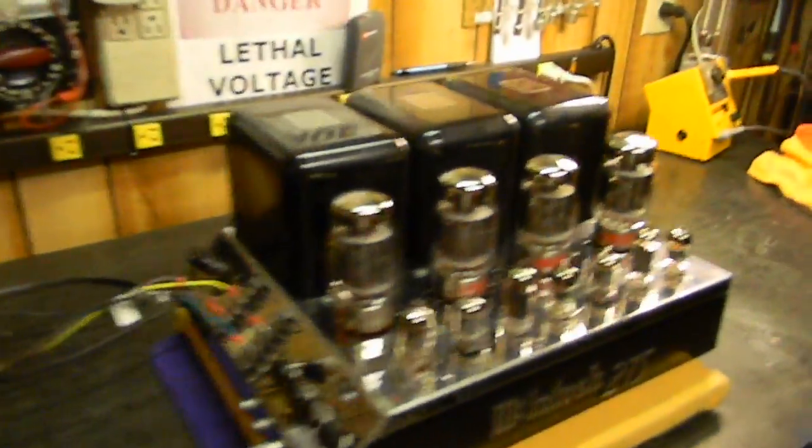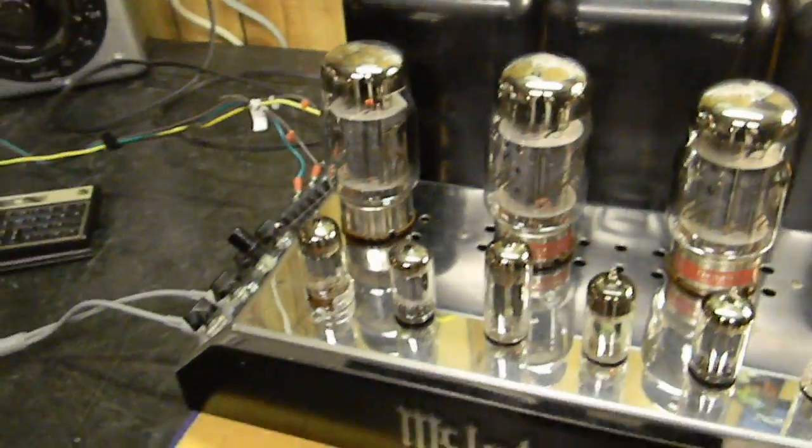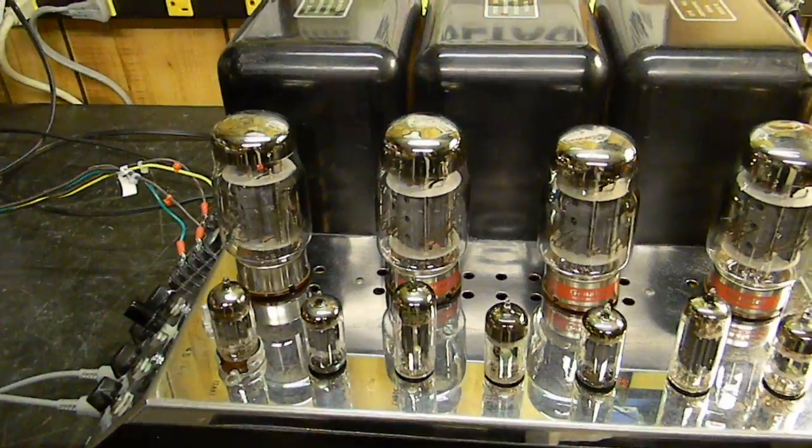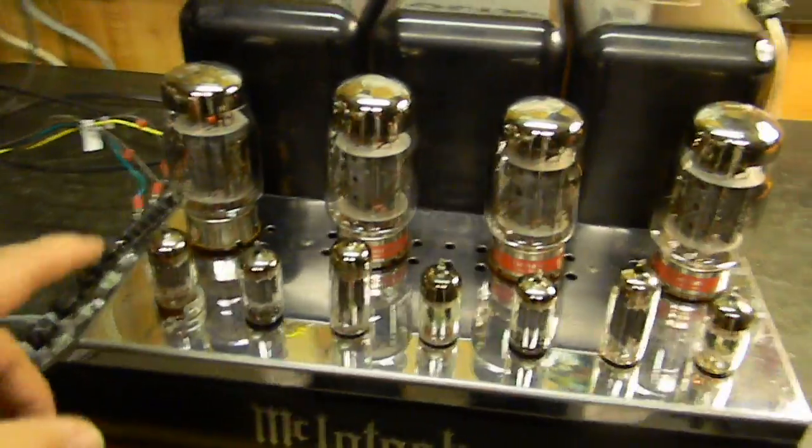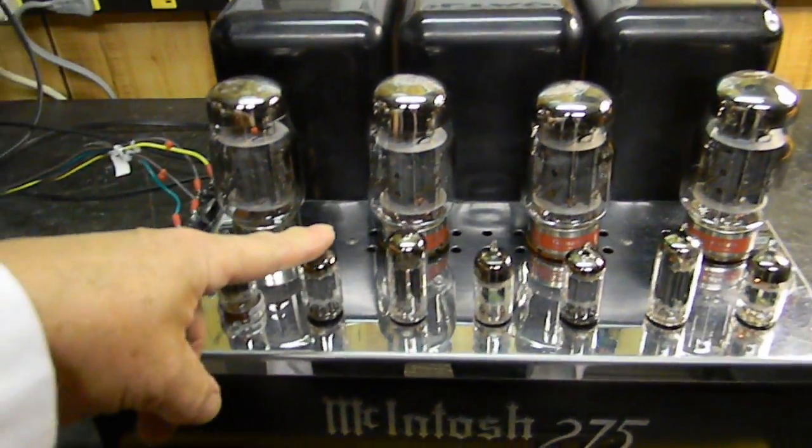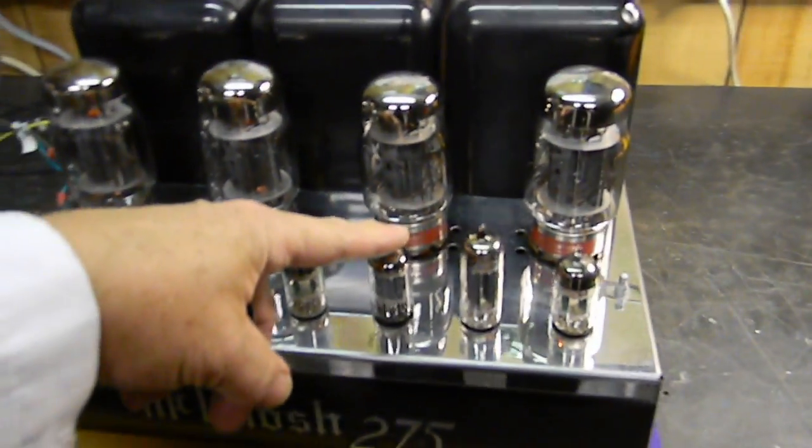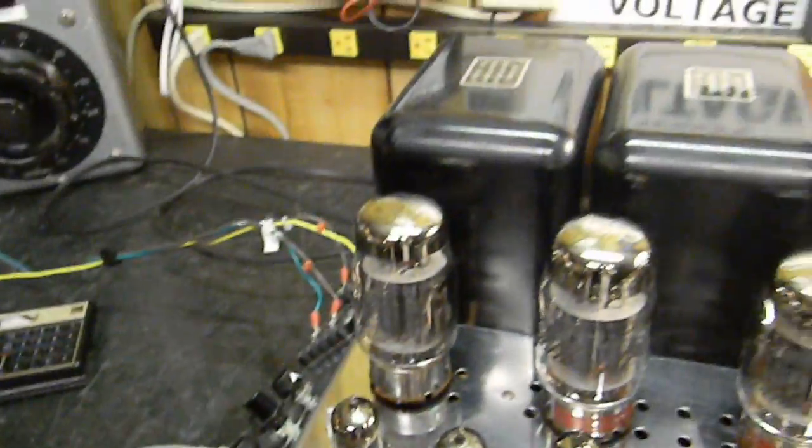The output tubes are the Gold Lion made in Russia. They're the Genalex made in Russia, so the new issue Genalex. This is Mullard, this is a Telefunken RCA, that's a JAN, another Telefunken, that's probably another RCA, another JAN. Well, we've got it.